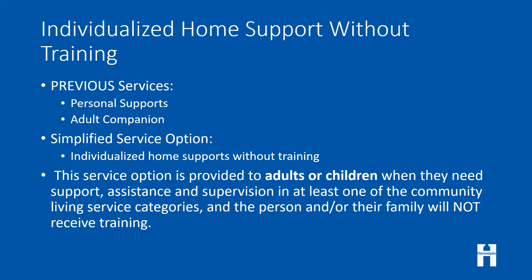Individualized home supports without training — the previous services were personal supports and adult companion, typically for support and supervision at home and in the community, not requiring additional training. The simplified option is called individualized home supports without training. This service is for adults and/or children when they need support, assistance, and supervision in at least one of the community living service categories, and the person or family will not receive training.